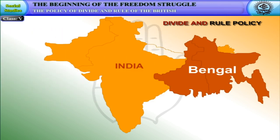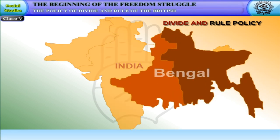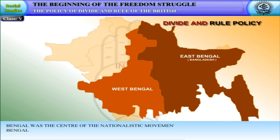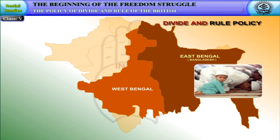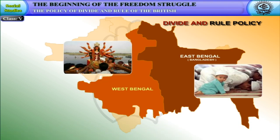They then thought of the divide and rule policy. As Bengal was the center of the Nationalist movement, the British decided to divide Bengal into East Bengal for the Muslims and West Bengal for the Hindus. In 1905, the partition of Bengal was announced.